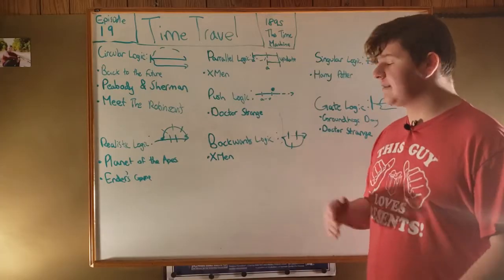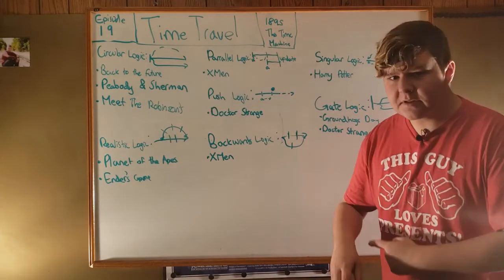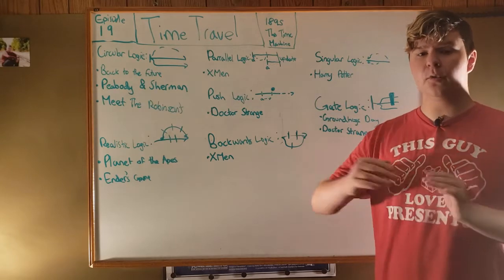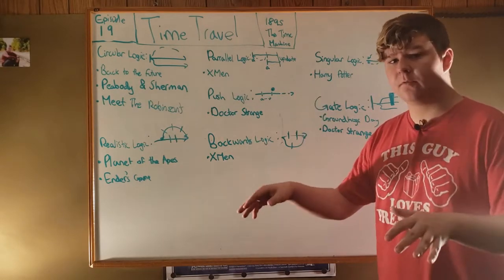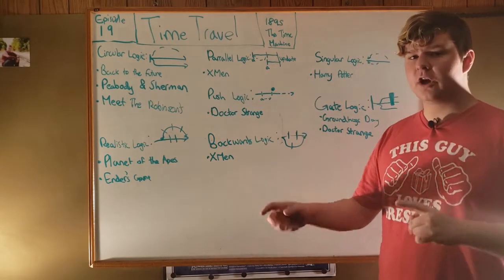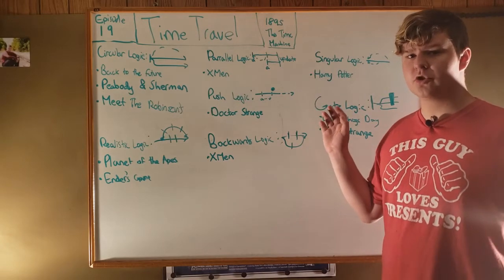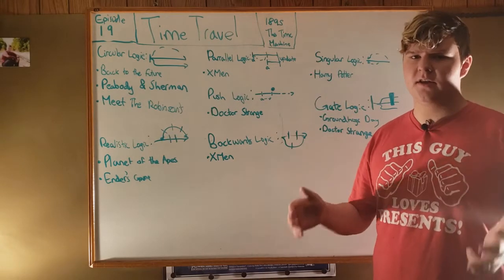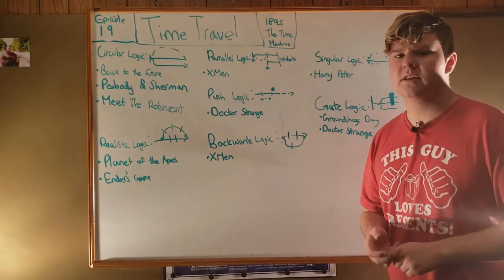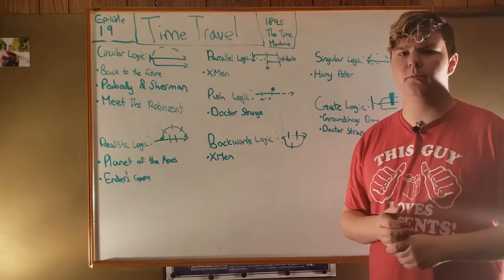Some movies, like X-Men Days of Future Past, actually have the exact opposite of this logic, where instead of going faster makes time around you go faster, going faster actually makes time around you appear to go slower, meaning you're basically perceiving everything quicker. Quicksilver does this in order to take down a whole room of people.